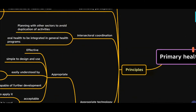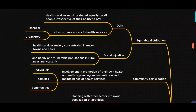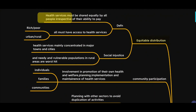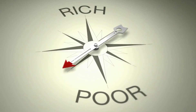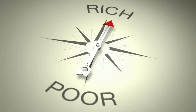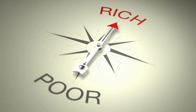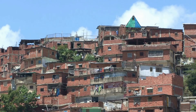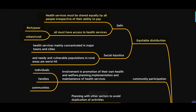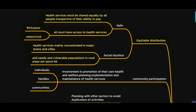Now let's discuss the principles of primary health care. The first principle is equitable distribution: health services must be shared equally by all people irrespective of their ability to pay. Whether rich or poor, urban or rural, everybody must have access to health services. At present, health services are mainly concentrated in major towns and cities, and the needy and vulnerable population in rural areas are the worst hit.